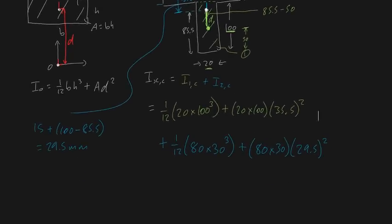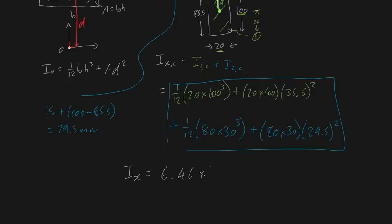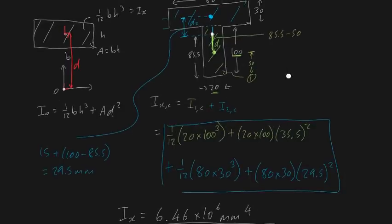Putting it all into the calculator, our final answer is Ix = 6.46 × 10⁶ mm⁴, which is the moment of inertia about the centroid of the T-bar. In SI units, that's 6.46 × 10⁻⁶ m⁴. That's the moment of inertia about the centroid point. I hope that makes sense — I may do one more challenging problem involving a very similar but more unique approach.